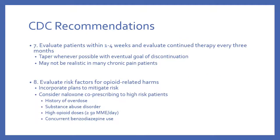Recommendations seven and eight: evaluate patients within one to four weeks of initiating opioid therapy, and re-evaluate continued therapy every three months or so with the eventual goal of tapering patients off opioids — though that's not realistic for many chronic pain patients. You also need to evaluate risk factors for opioid-related harms, incorporate plans to mitigate that risk, educate appropriately, and consider naloxone co-prescribing for high-risk patients.